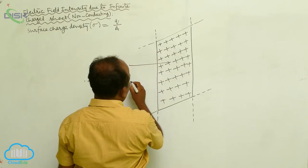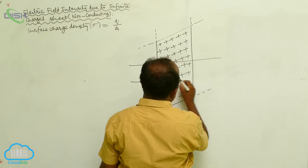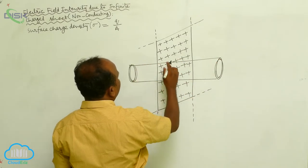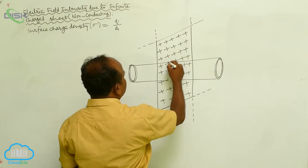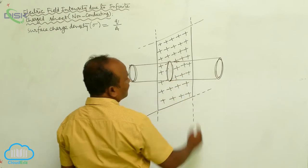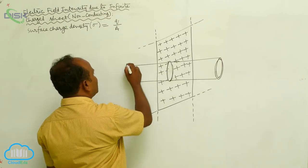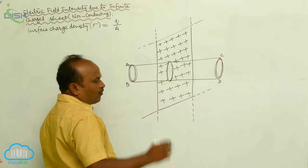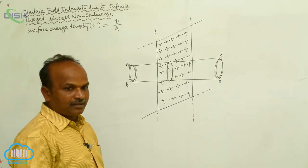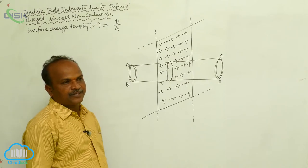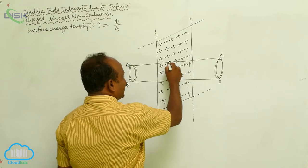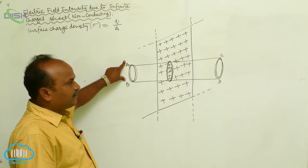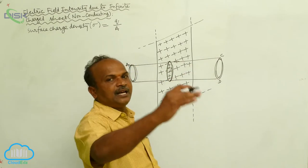This is the cylinder — labeled A, B, C, D. For the cylinder, there are two circular surfaces and one lateral surface. AB is one circular surface, CD is the other circular surface, and ABCD is the lateral surface. The charge enclosed within this Gaussian cylinder is noted.